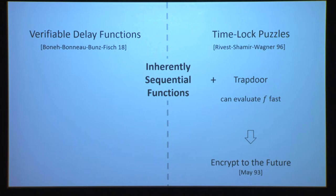Just one example: I can encrypt a message to the future. For example, I can publish an encryption of my secret diary so that it only becomes decryptable in, say, a hundred years from today when I'm already dead and famous.